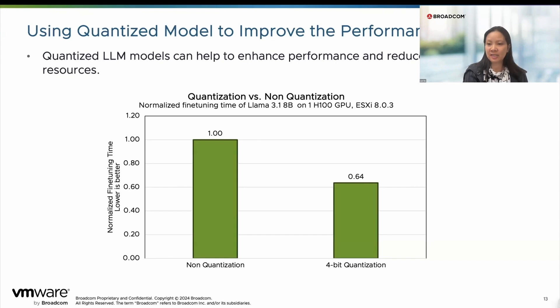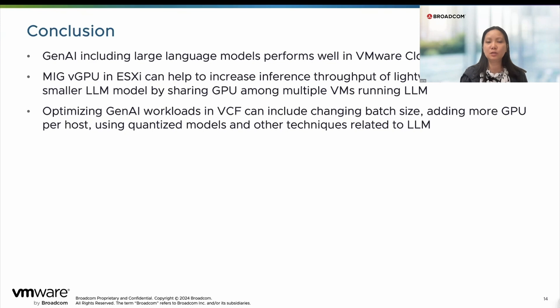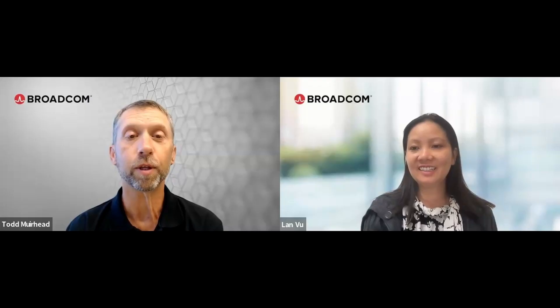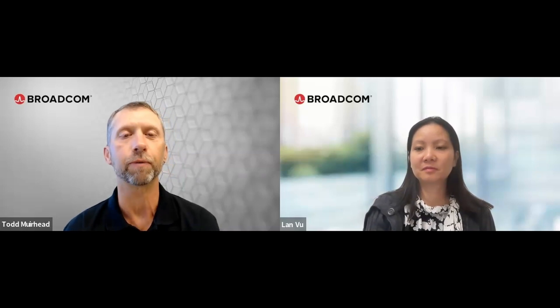To summarize some of the techniques — there are more, but these are key use cases customers can leverage to optimize their workloads in their data center. Gen AI models work very well in the VMware platform. For smaller workloads using smaller LLM models, we can use MIG vGPU to share the same physical GPU resources and increase throughput. There are multiple techniques customers can try to reduce the cost of AI infrastructure when deploying this type of workload in a VCF environment. This has been a great talk — really interesting to learn about the different strategies to optimize vGPUs for ML environments depending on your specific use case. Thank you to everybody for watching this episode, and I look forward to seeing you on another episode of the Extreme Performance Series soon.